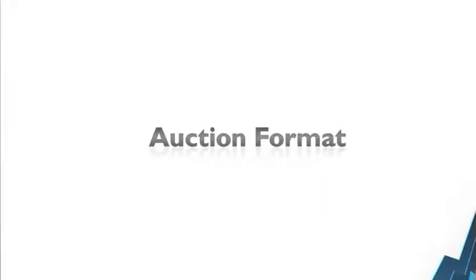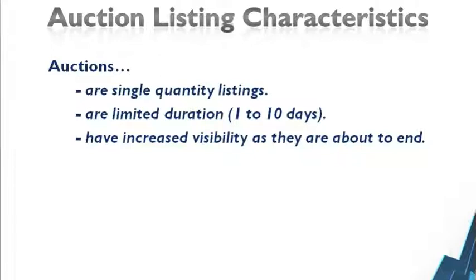Let's proceed with the auction format section. When we look at the eBay auction format, it is important to note that auctions support one single quantity in its listing, and that auctions generally range from 1-day to 10-day listing durations — in other words, they are live for a limited period of time. Knowing this, we can use Terapeak to understand how supply and demand works for auction listings and therefore control our listing volumes to maximize sales and profit.